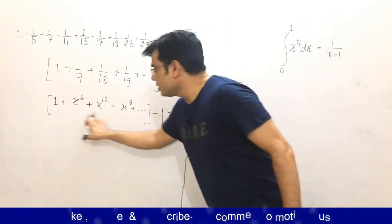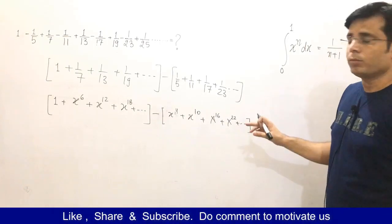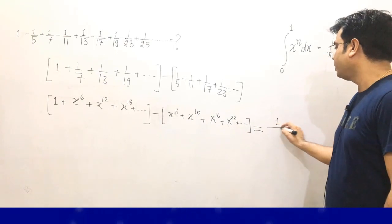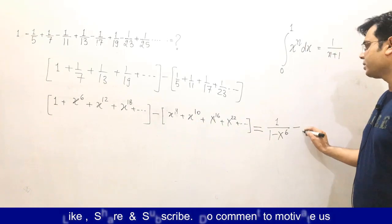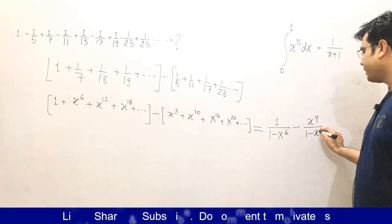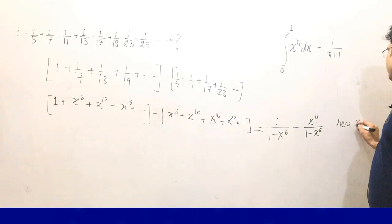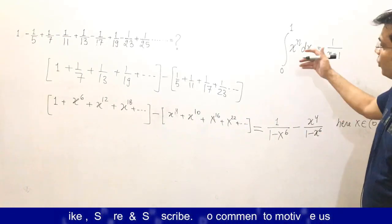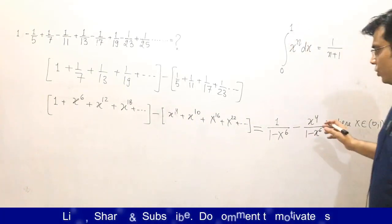This sum can now be written as an integral. The positive terms form an infinite geometric progression with common ratio x to the power 6, giving 1 divided by (1 − x⁶). Similarly, the negative terms give minus x to the power 4 divided by (1 − x⁶). This is valid because x lies between 0 and 1, since we are integrating from 0 to 1.